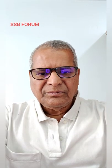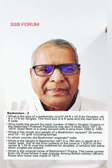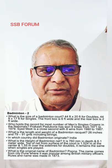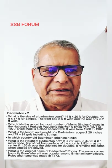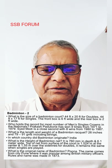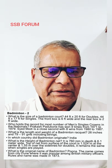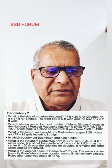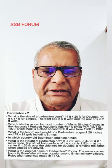Now let us move to slide number two. What is the size of a badminton court? It is 44 feet by 20 feet for doubles, and 44 feet by 17 feet for singles. The front box is 6 feet wide and the rear box is 2 feet wide. Who holds the record for the most men's singles crowns in the nationals? The answer is Prakash Padukone, who won 9 times from 1971 to 1979. Syed Modi is a close second with 8 wins from 1980 to 1987.